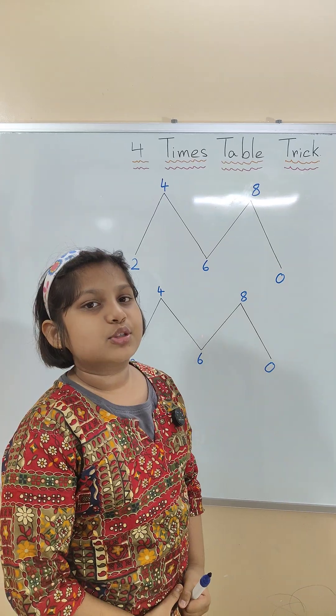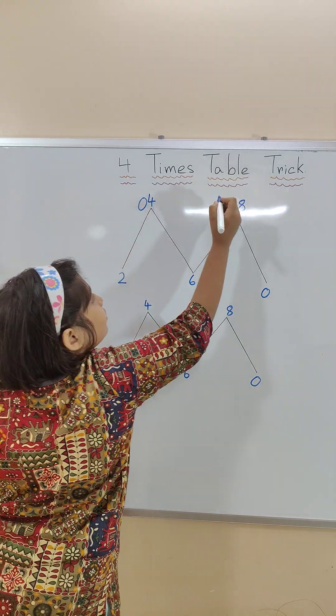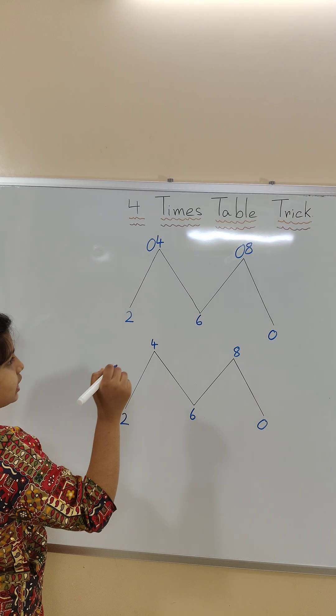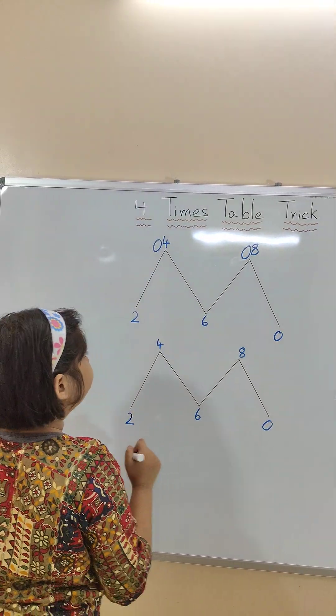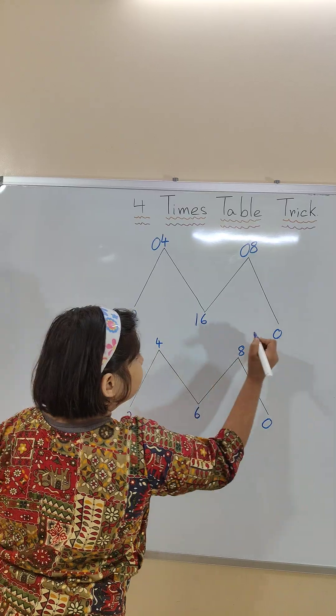In the first row in tens place we will write 0, 0, 0. In the second row in tens place we will write 1 except the last one. There we write 2. 1, 1, 2.